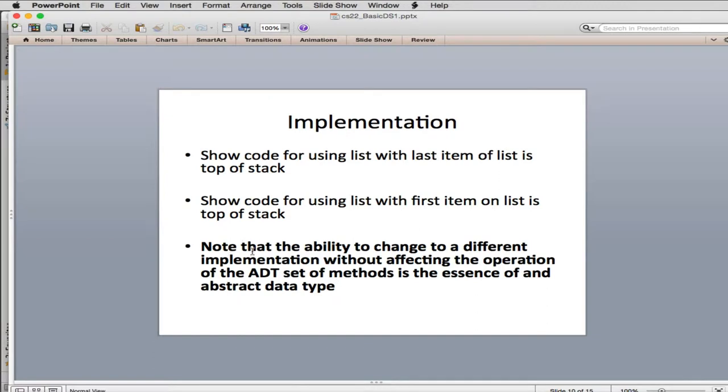This is important. Note that the ability to change to a different implementation without affecting the operation of the ADT set of methods is the essence of abstract data type. When you have an abstract data type, you set a certain set of methods and how they're supposed to behave. Anyone using that abstract data type will expect that behavior to be exactly the same, regardless of how inside the definition of the stack is actually implemented.